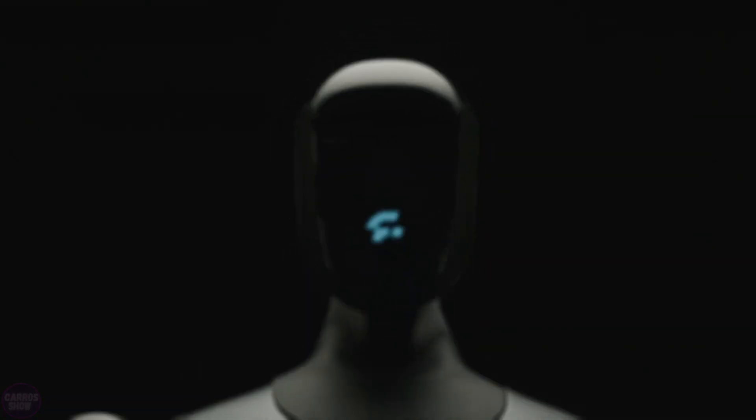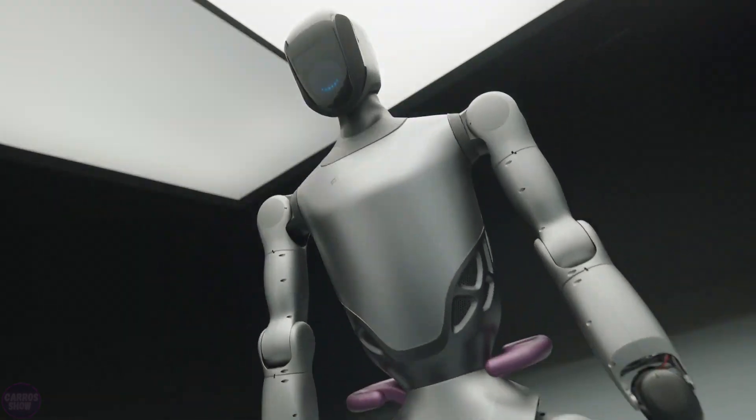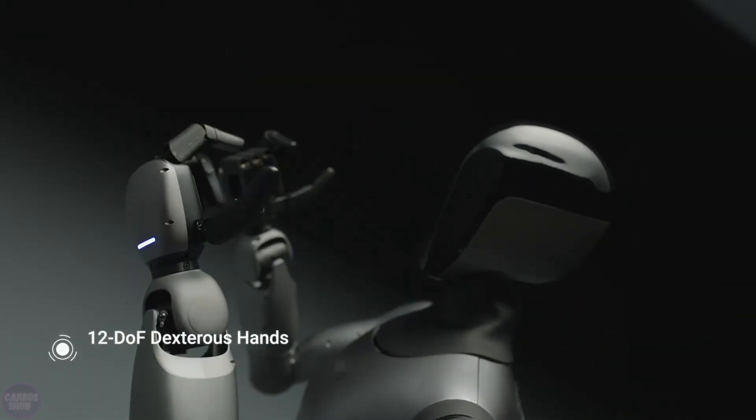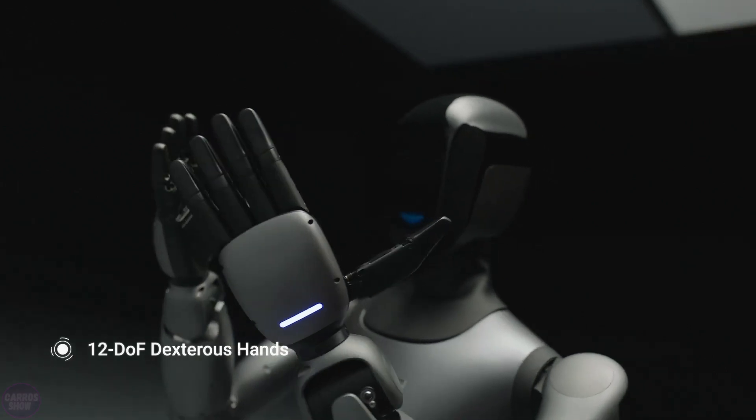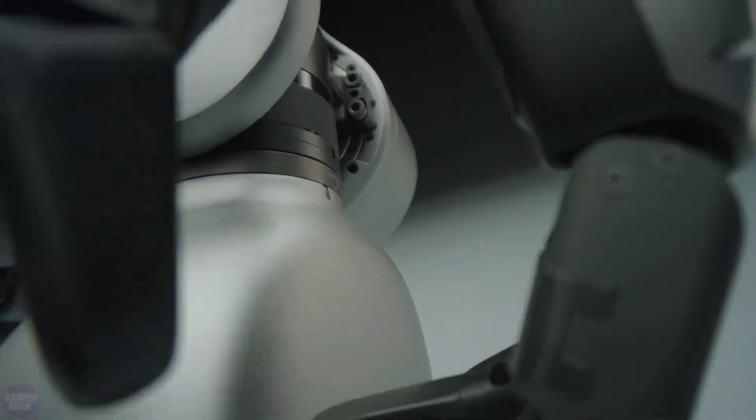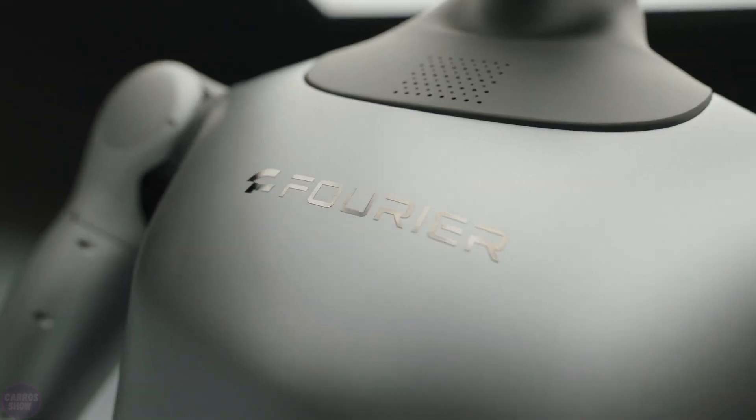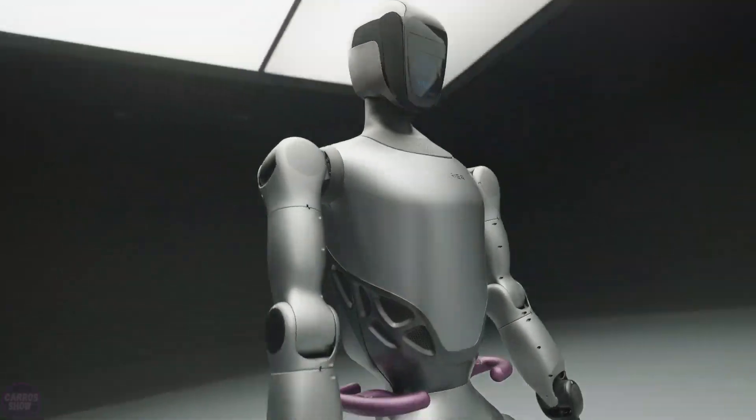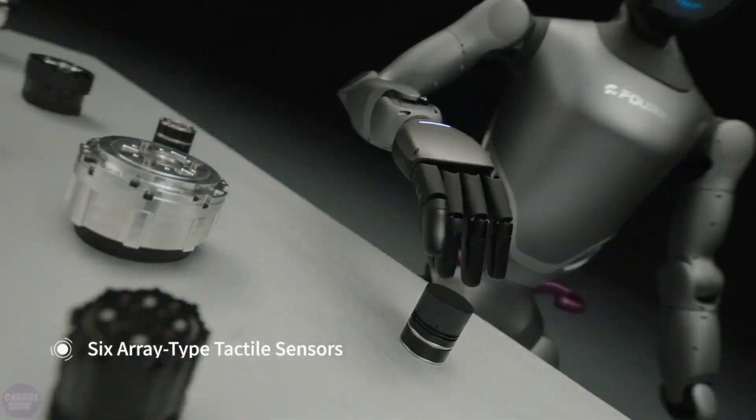The robotics company Fourier Intelligence from China has introduced the second generation of its humanoid robots designated GR2. The robot features a new body with an updated design, a quick-release battery with double the capacity, and anthropomorphic arms with 12 degrees of freedom.